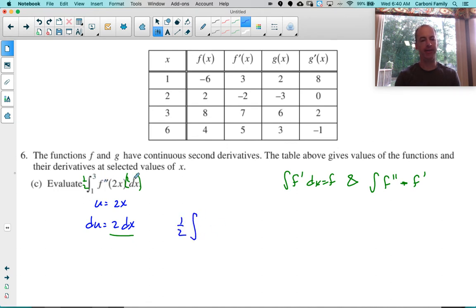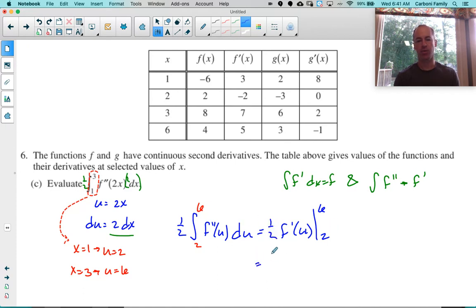This would give me 1 half integral of F double prime of U DU. For the limits of integration I am a fan of converting them to my new variable U. If X equals 1 and U equals 2X, then U would equal 2, so my lower limit becomes 2. If X equals 3, then 2 times 3 would be 6. I like doing this because once you convert those limits of integration you don't ever have to go back to X. The antiderivative of F double prime of U would be F prime of U evaluated from 2 to 6.